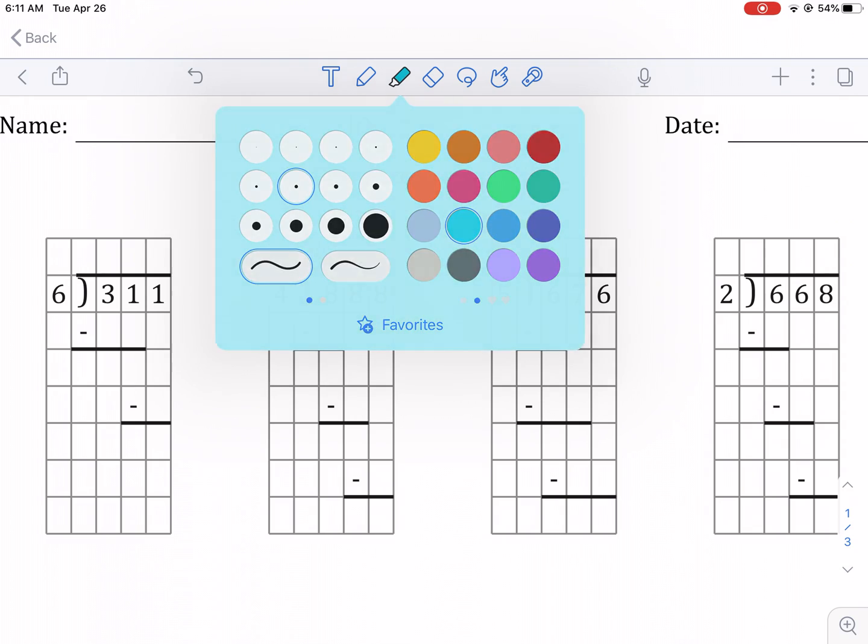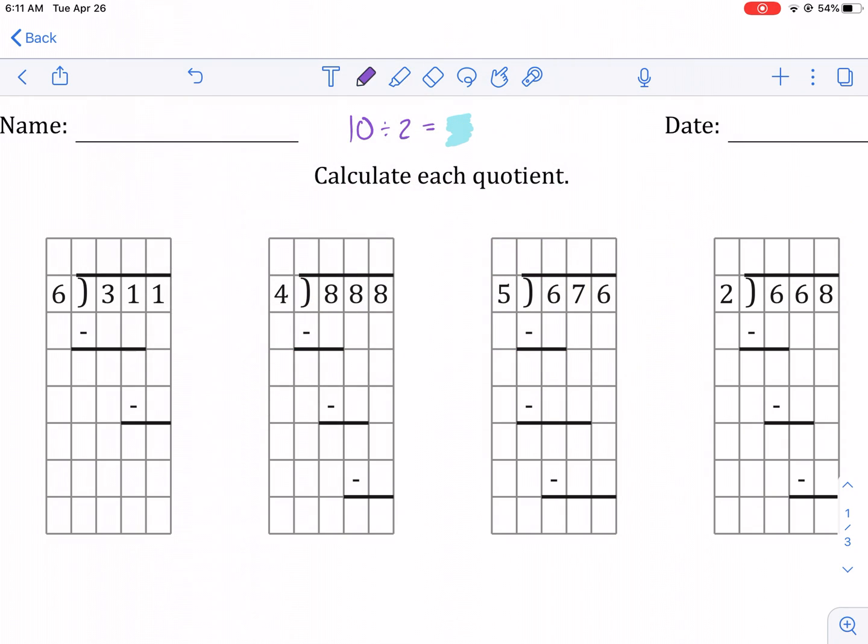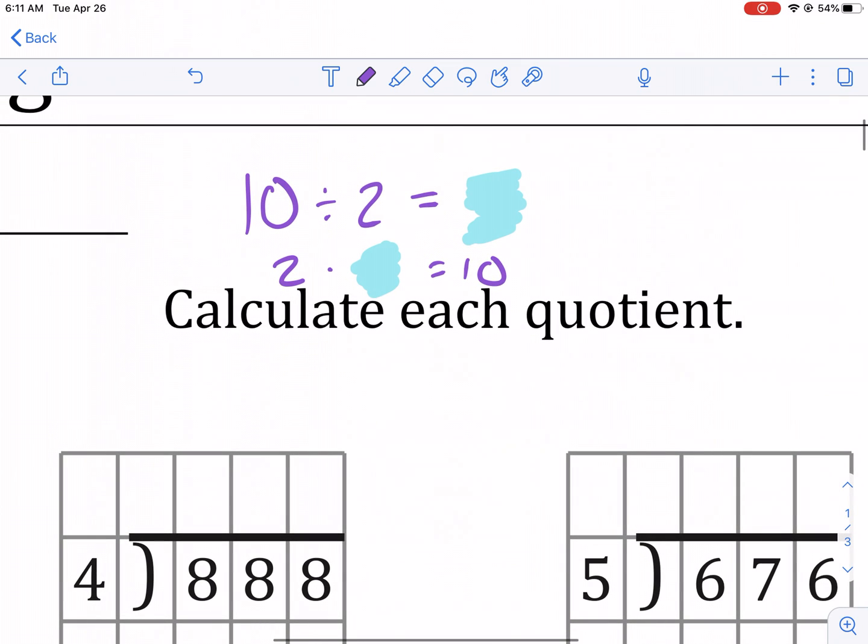This is saying something times 2, 2 times that same something equals 10. So it's basically just the reverse of multiplication. And this is 5 as we know. So 2 times 5 equals 10.